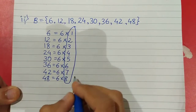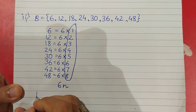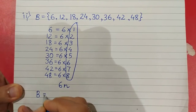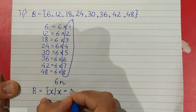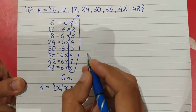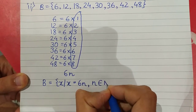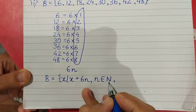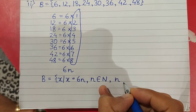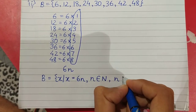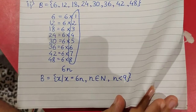Now all these numbers 1 to 8 can be taken as n, so this is nothing but 6n. Let's see how to write it in set builder form: B is equal to { x such that x = 6n, where n belongs to the set of natural numbers and n is less than 9 }. So this is how we write it in set builder form.